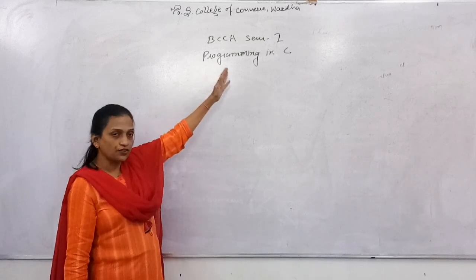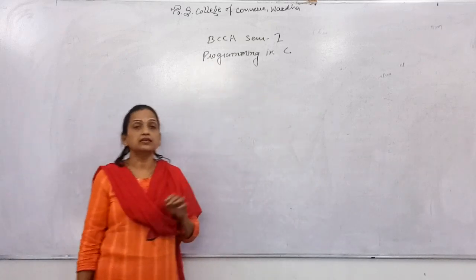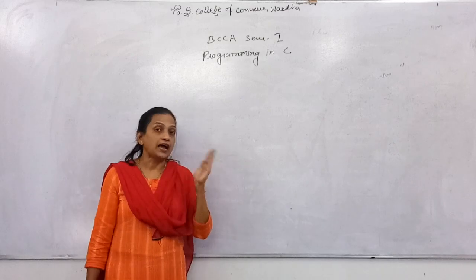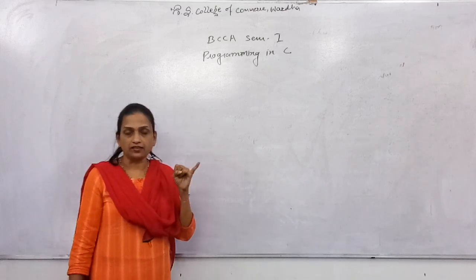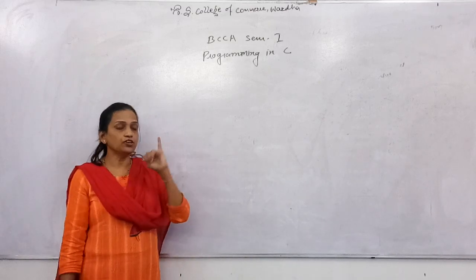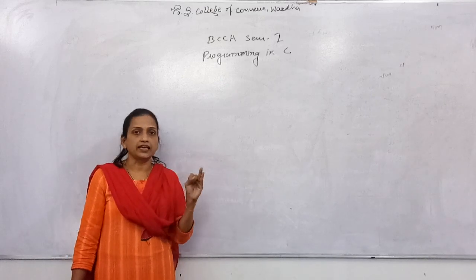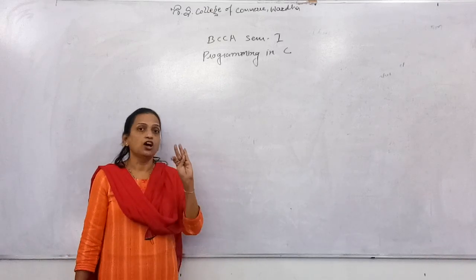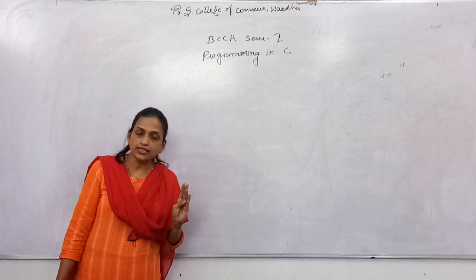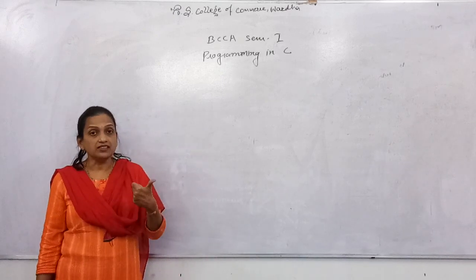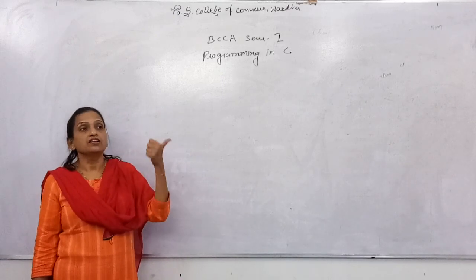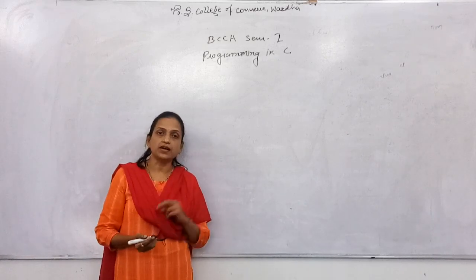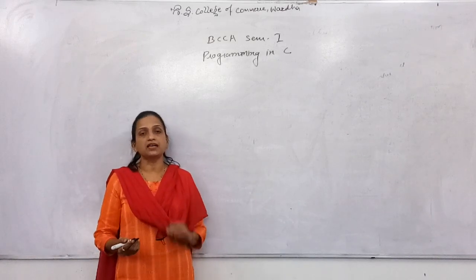The basic structure of a C program has different sections. First is the documentation section. Second is the links section. Third is the defined section. Fourth is global declaration. Fifth is the main section. In the main section, there are again two parts: declaration and executable parts.